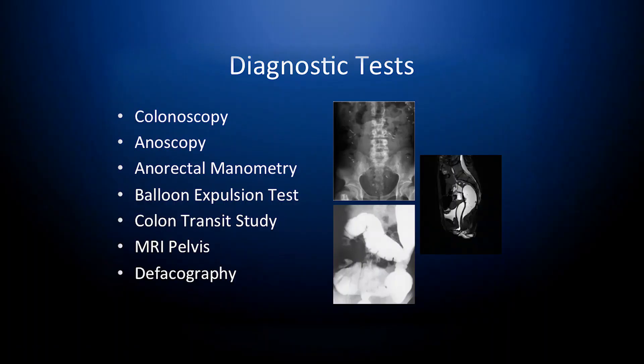Let's go over some of the diagnostic tests that are used to evaluate defecatory disorders. Most common is a colonoscopy. This is very helpful for excluding underlying colorectal cancer or other mechanical causes. Anoscopy can be used to evaluate the anal rectum. Anorectal manometry, which we'll demonstrate in depth, as well as balloon expulsion testing, can check for other defecatory disorders related to contraction or squeeze. Colon transit studies can be helpful for evaluating slow transit constipation. MRI pelvis can evaluate for structural or anatomic disorders, as well as defecography.